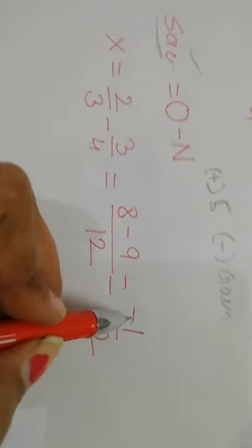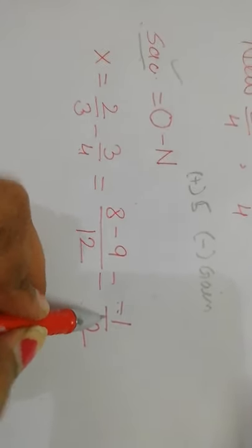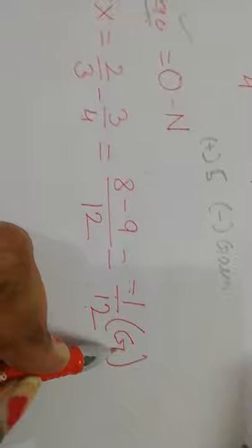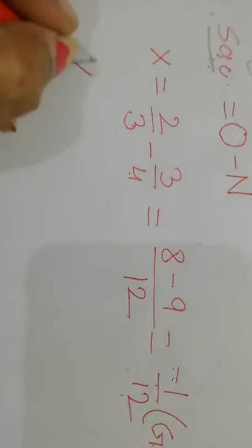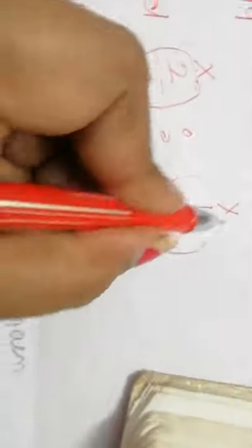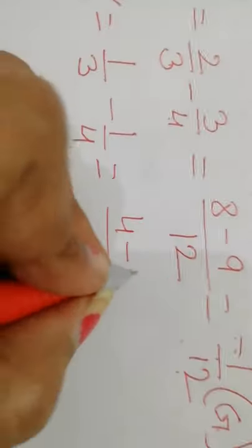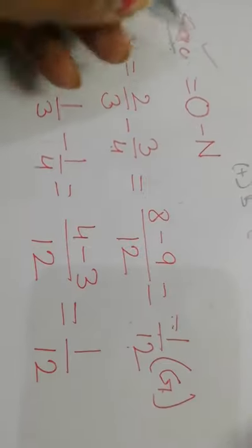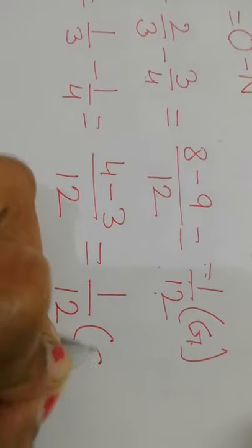For Y, the sacrificing ratio is old minus new: 1/3 minus 1/4. LCM is 12. So: 4×1 = 4, minus 3×1 = 3. The answer is 1/12 — a positive answer. Since the answer is positive, Y is sacrificing. So Y's sacrificing ratio is 1/12.